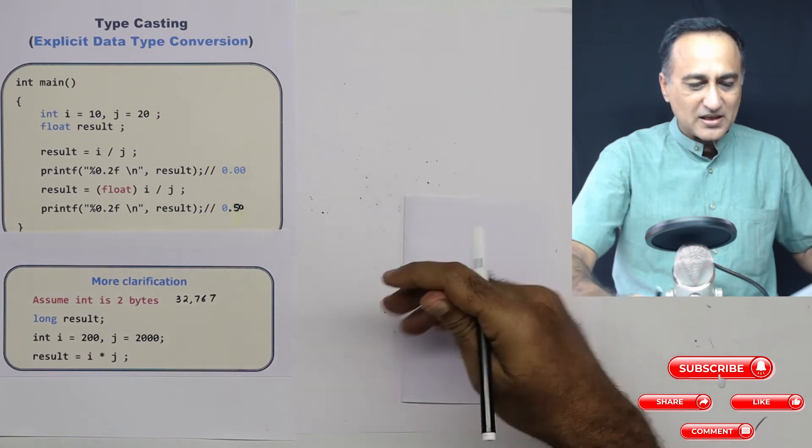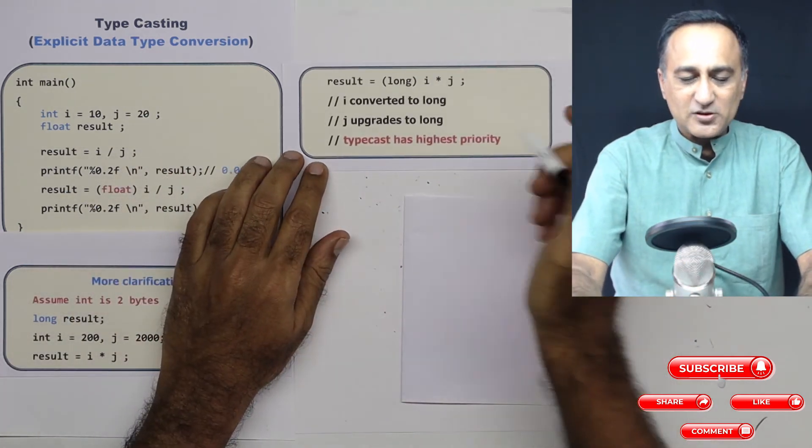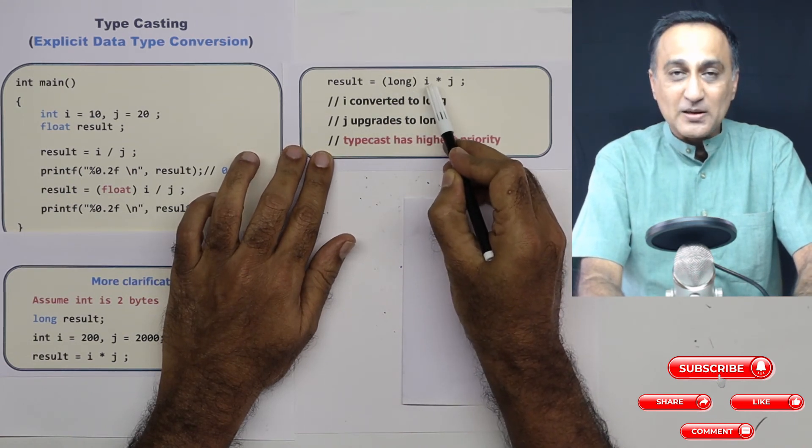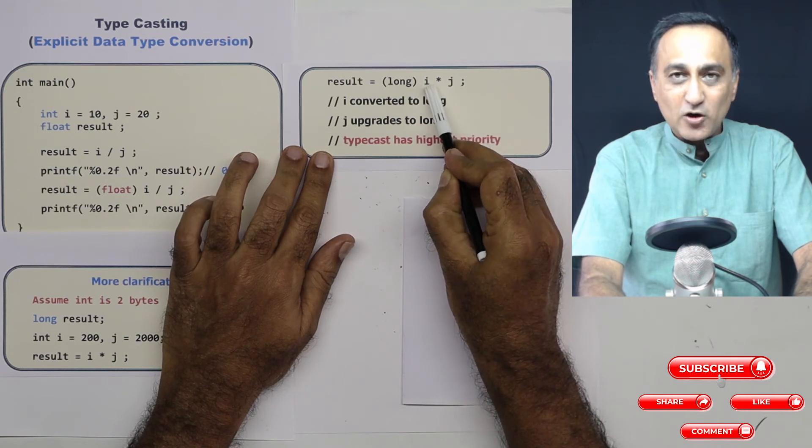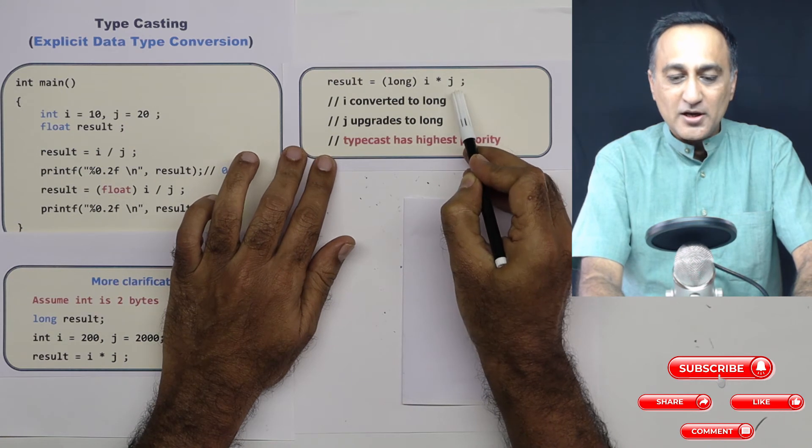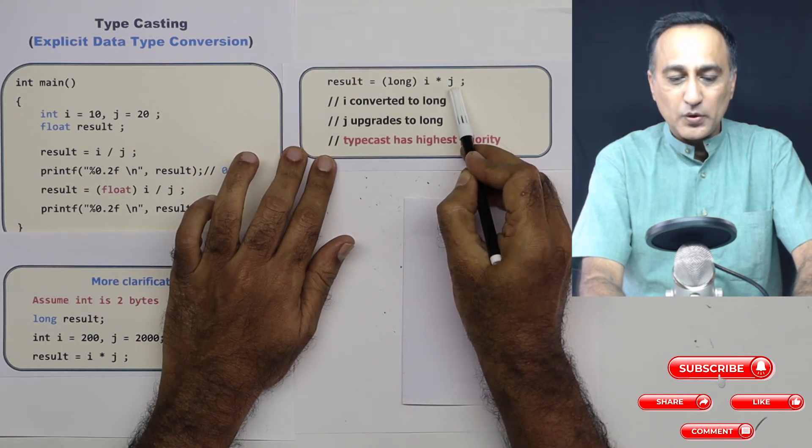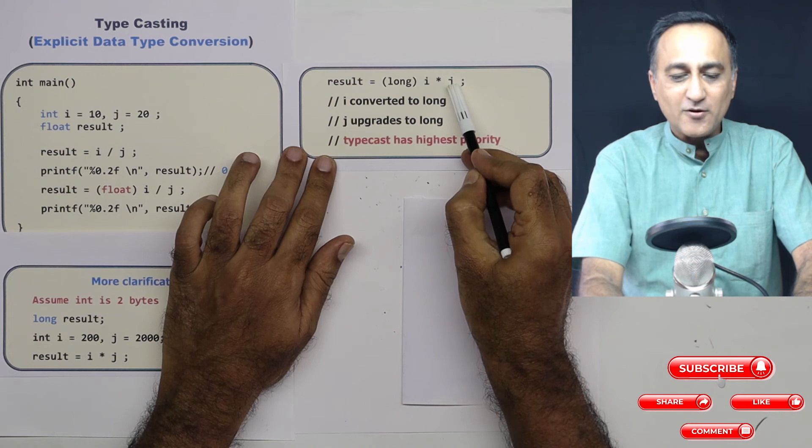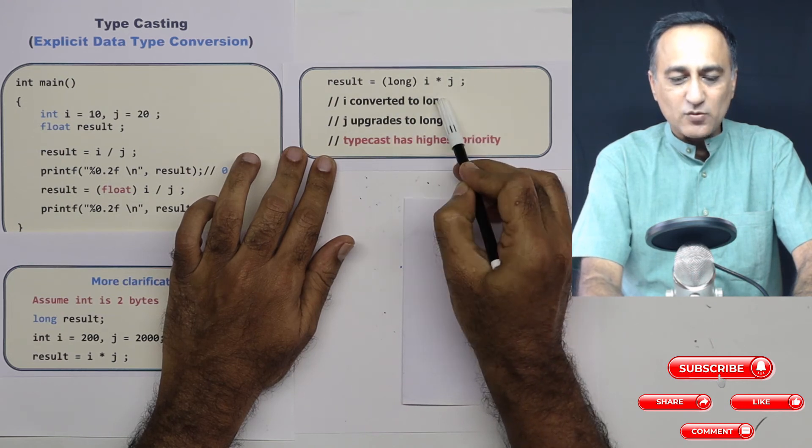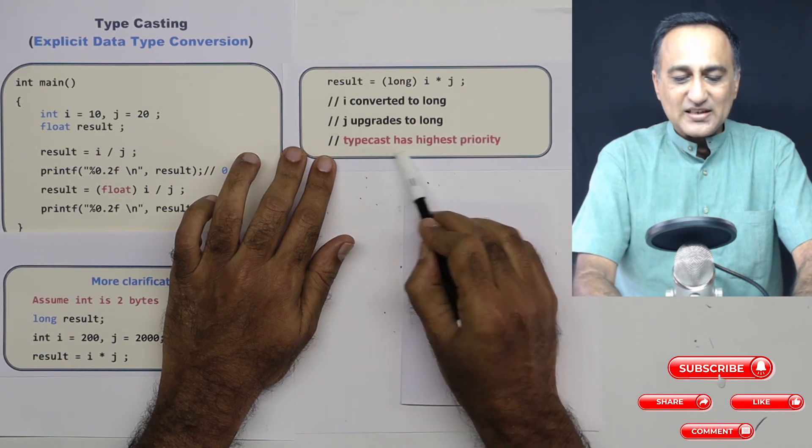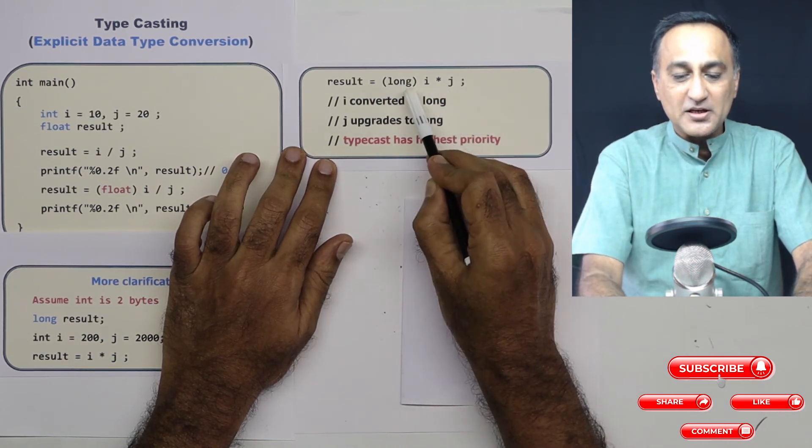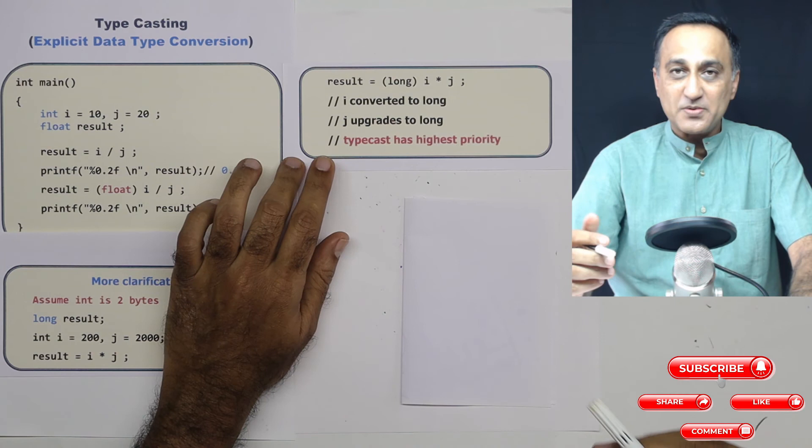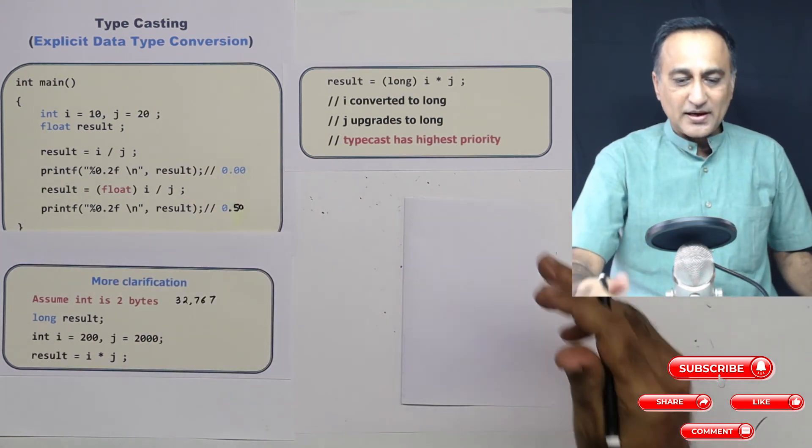How do you solve this problem? What you can do is you can say result is typecasting long i, that means i is now forced to become a long type of a variable. When i is a long, the multiplication can only happen when j is also long. So implicitly the compiler converts j also into a long type of variable. Now multiplying two long variables on the right hand side is not a problem. Since typecast has the highest precedence compared to even multiplication, that's why that happens first.